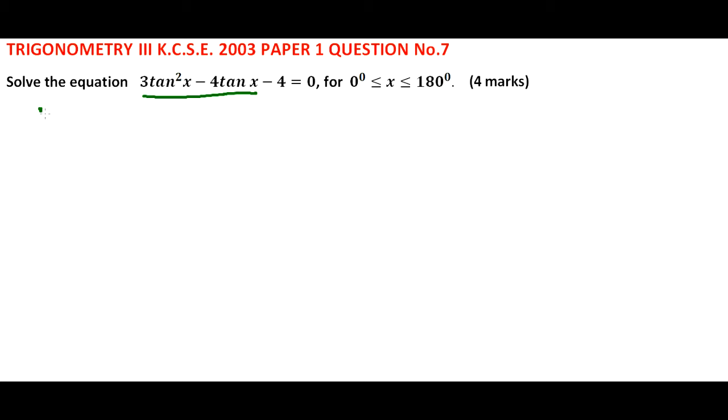We can write this equation as 3 tan²x − 6 tan x + 2 tan x − 4 = 0.